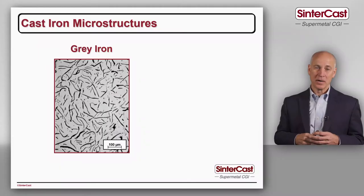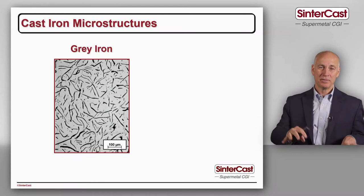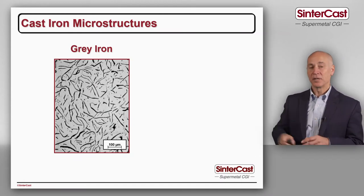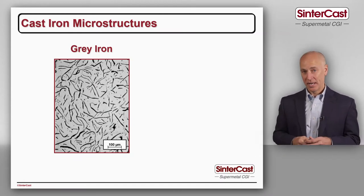The graphite flakes also help with vibration damping. If you hit the side of this casting, the vibrations try to pass through but they bounce around on the graphite particles until they finally just dissipate. So very good vibration damping.